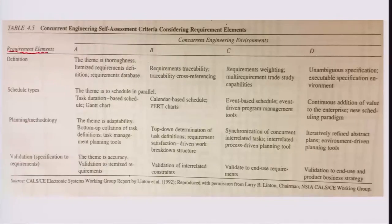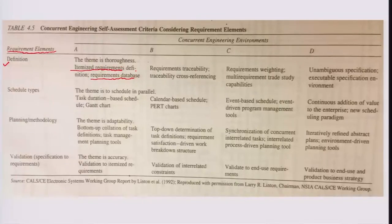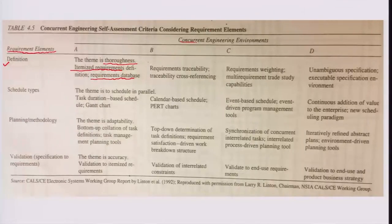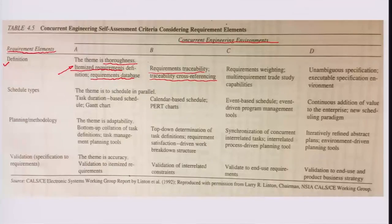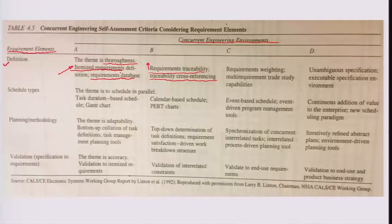For requirement elements, the first sub-element is definition. Definition could be an itemized requirement at level A, where there is a database available based on these itemized requirements, and the theme is thoroughness — how well-defined and thorough the requirements are for setting up the concurrent engineering environment. There could also be a level B which talks about requirement traceability: how easily you can trace it. Traceability could also mean cross-referencing, for example, equipment or items needed for one part could be cross-referenced by another user very easily through some indexing. That is level B — some organizational aspect added to the itemized requirements.